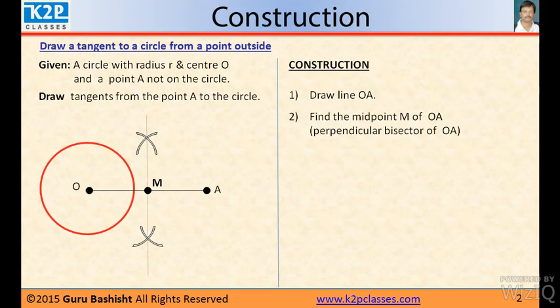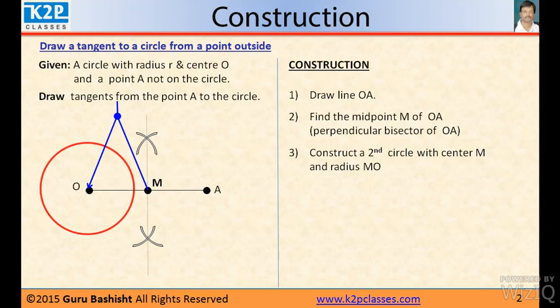The point M is the point which divides OA in equal two parts. Now, construct a circle with center M and radius MO. Now see, the second circle cuts the red circle, the first circle at two points.